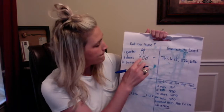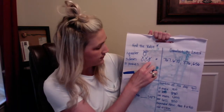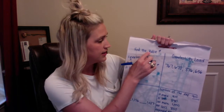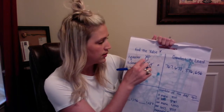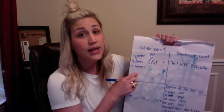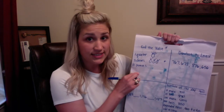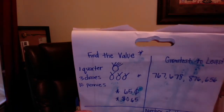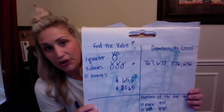So you can go 25, 35, 45, 55, plus ten is 65 cents. Or you can go 5, 10, 15, 20, 25, 30, 35, 40, 45, 50, 55 — ten more than 55 is 65 cents. So if you wrote 65 cents with a cent sign, give yourself a star, and 65 cents with a dollar sign, give yourself a star.